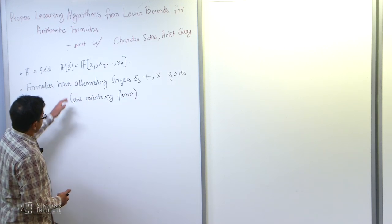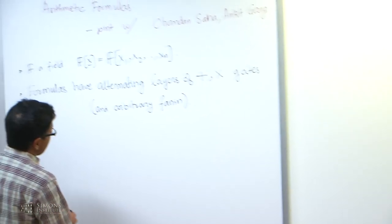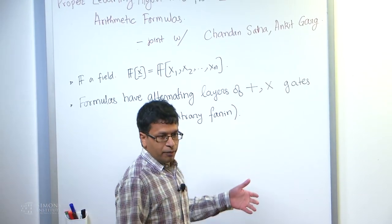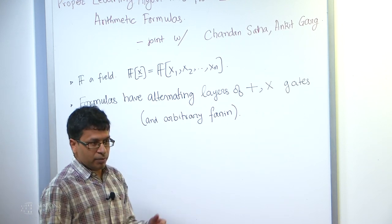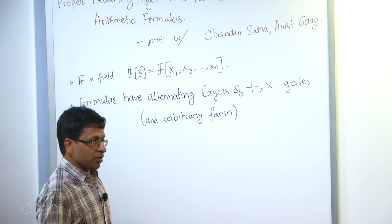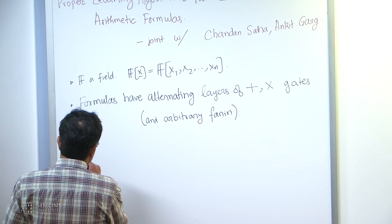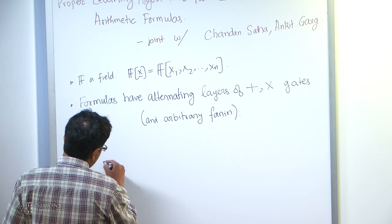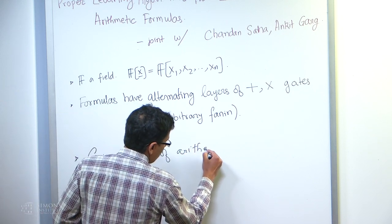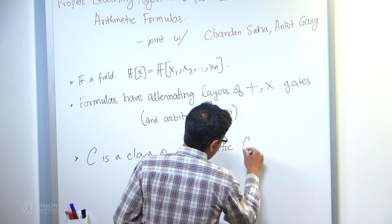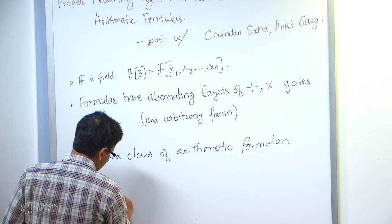We denote it by this and we consider arithmetic formulas. We will always have alternating layers of addition and multiplication gates. We can assume that without loss of generality if we allow arbitrary fan-in, because we can collapse adjacent gates which have the same kind of operation. Now suppose C is a class of arithmetic formulas. The learning problem for C, also called the reconstruction problem for C.